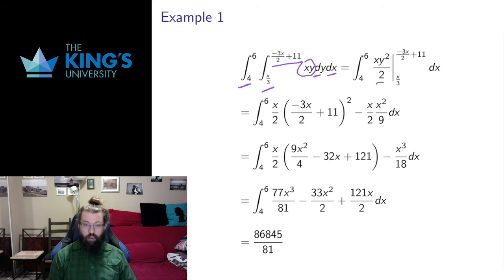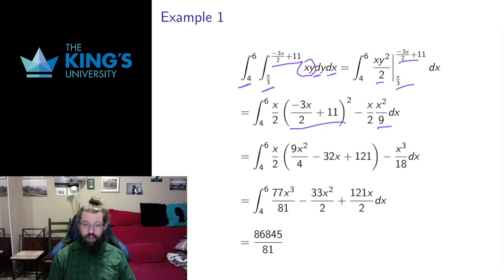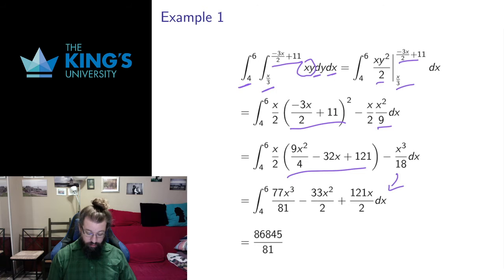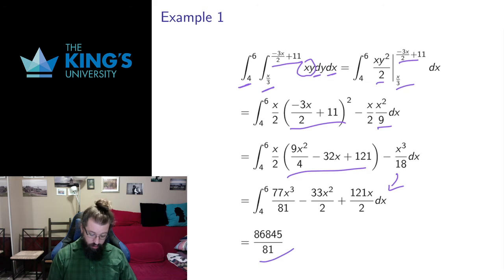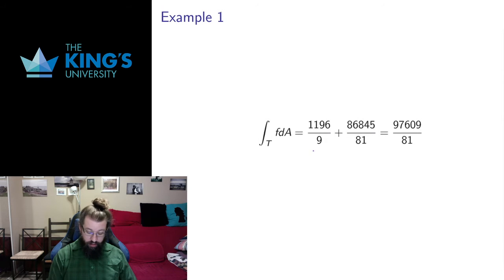The function integrates the same way: y goes to y²/2. But now I have to put in these bounds — I need (−3x/2 + 11) squared, and then x/3 again squares to x²/9. I square that binomial, do some simplifications, and get an integral in x. Skipping the steps, these are just nice polynomial integrals. The number I get when I evaluate that polynomial integral at 6 and subtract the value at 4 is 86,845 over 81. And the total integral is then the sum of those two pieces over the two pieces of the triangle, which gives me this particular value.